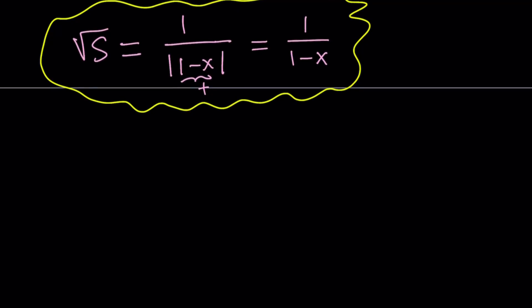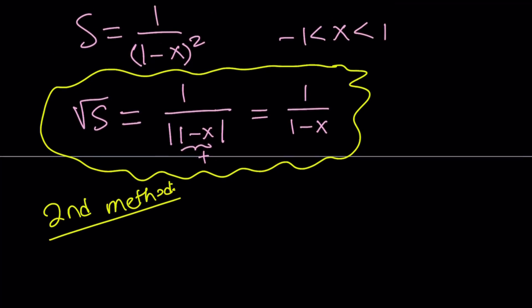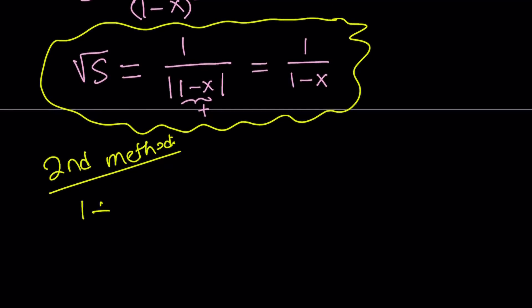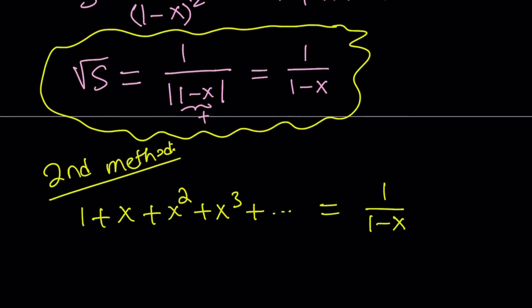Our second method is a little different. To find the square root of this sum, I'm going to try to obtain that sum from my well-known geometric series: 1 plus x plus x squared plus x cubed plus so on and so forth equals 1 over 1 minus x, convergent if x is between negative 1 and 1. But remember, our sum under the radical looks like 1 plus 2x plus 3x squared plus 4x cubed.